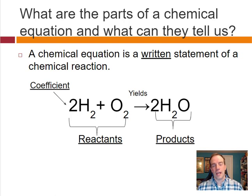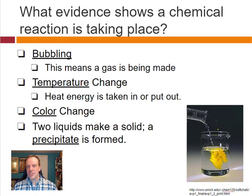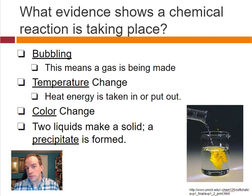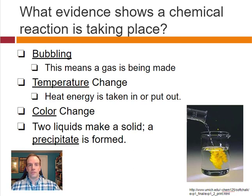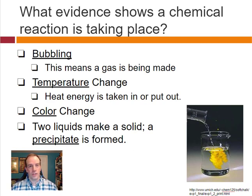If we see changes happening, how do we know it's a chemical reaction rather than a physical change? There are four things we can look for, and often they don't appear alone. One of these is bubbling — if we mix things together and there's bubbling, like with vinegar and baking soda, that is evidence of a chemical reaction.